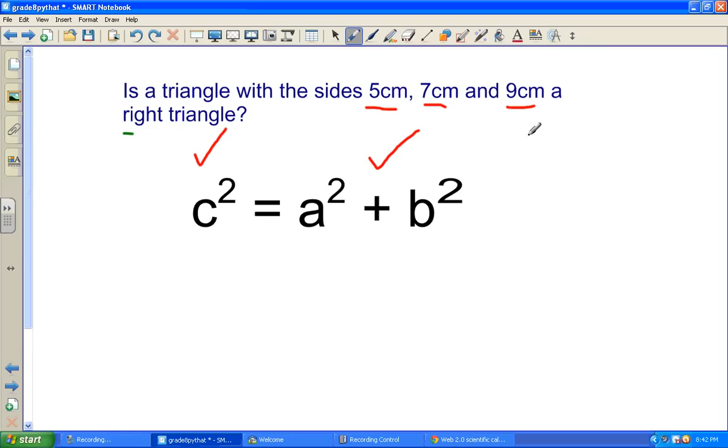But which one's C squared? Remember, as I said before, the hypotenuse will be the longest. So if this is the longest, this will be 9. And of course, we'll have to do squared.